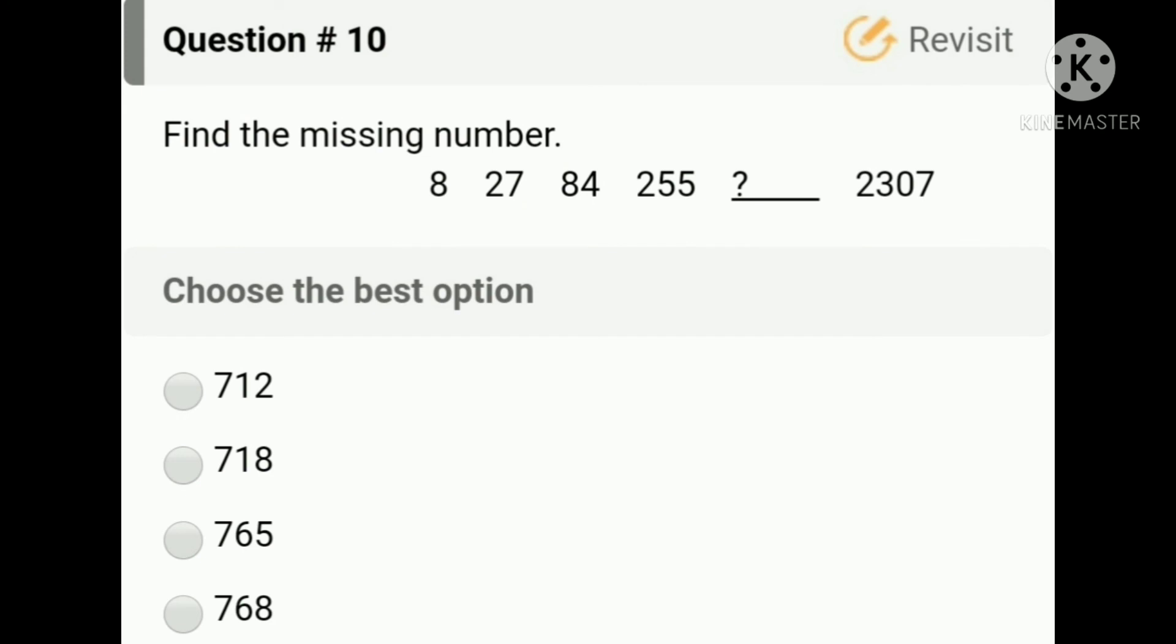The last and tenth question is: find the missing number. Here a sequence is given. The first number is 8. If we multiply 3 with 8, then it will be 24. If we add 3, then it will be 27. 27 into 3 plus 3 is 84. 84 into 3 plus 3 is 255. 255 into 3 plus 3 is 768. And 768 into 3 plus 3 is equal to 2307. So the correct option will be option D, 768.